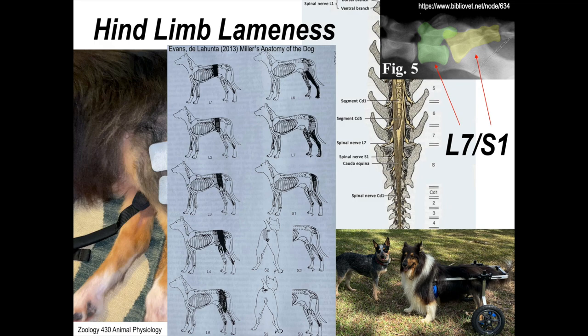And it's known that L7, S1, in that region, well, maybe L6 as well, give rise to the sciatic nerve, which innervates the lower limb, the feet, and the back of the thigh, the most caudal segment of the limbs.